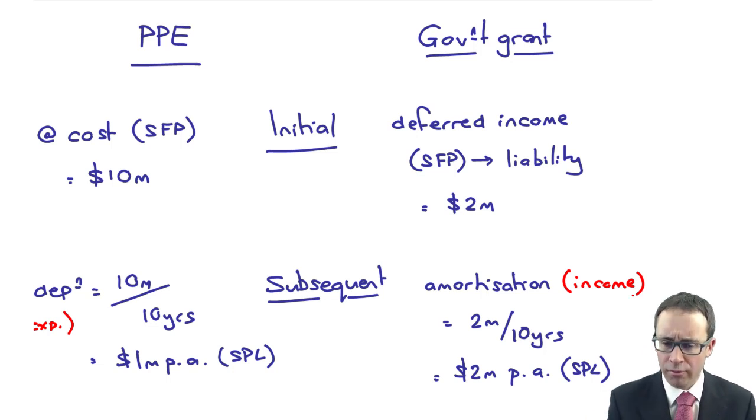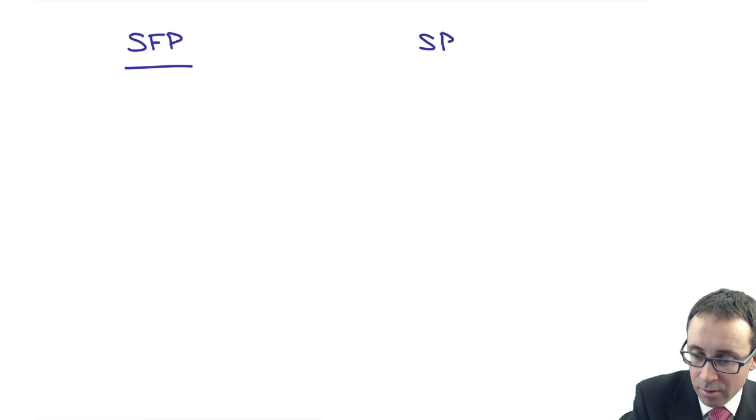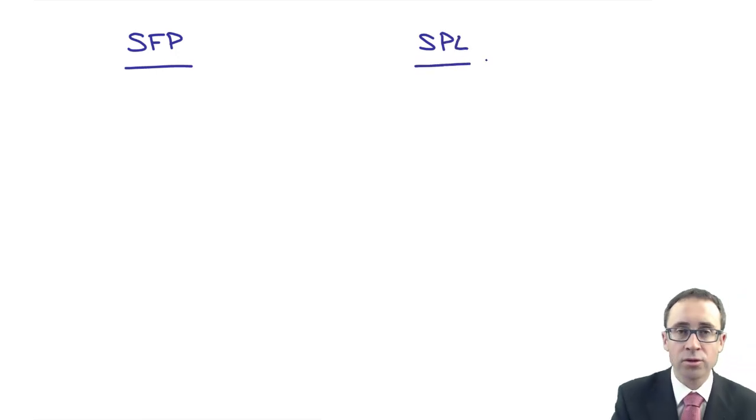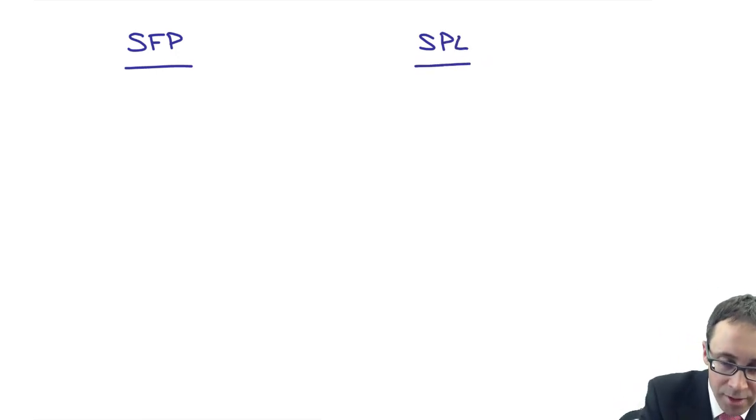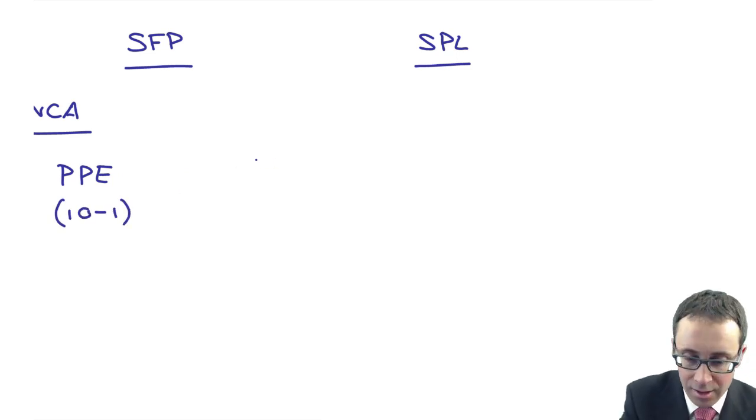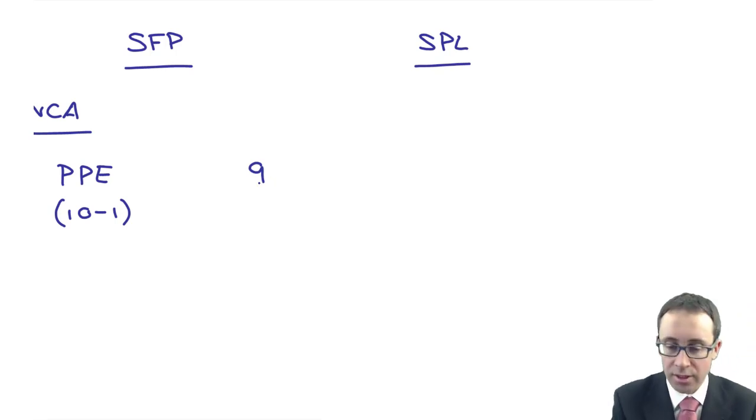Again, if you wanted, you could then start to look at what or explain what you have on the financial statements. Again, I'm going to draw it up. You would need to explain it in your own words. So SFP, statement of profit or loss. On the SFP, I have my non-current assets. I have my property, plant and equipment. Was it cost of one depreciation? Sorry, cost of 10. Depreciation of one. Gives me 9 million.